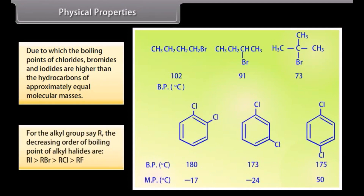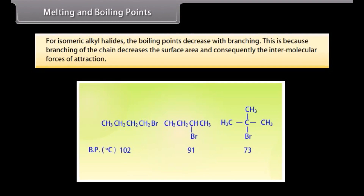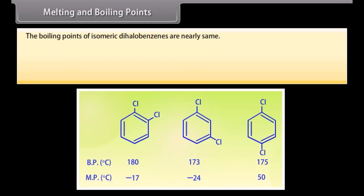For any alkyl group R, the decreasing order of boiling points of alkyl halides is: RI has the highest boiling point, followed by RBr, then RCl, and then RF. For isomeric alkyl halides, the boiling point decreases with branching, because branching of the chain decreases the surface area and consequently the intermolecular forces of attraction. The boiling points of isomeric dihalobenzenes are nearly the same.